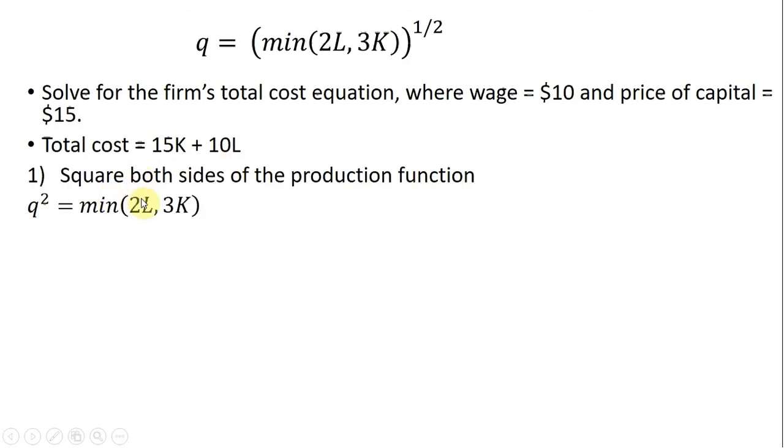The first thing I want to do is square both sides of this production function to get rid of the square root term. So doing that, Q squared equals the minimum of 2L or 3K.